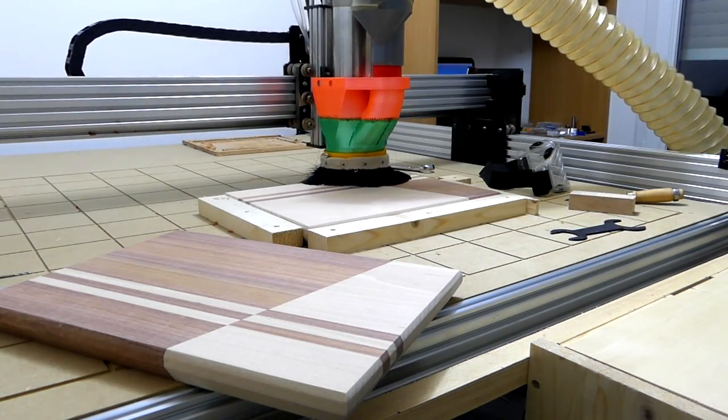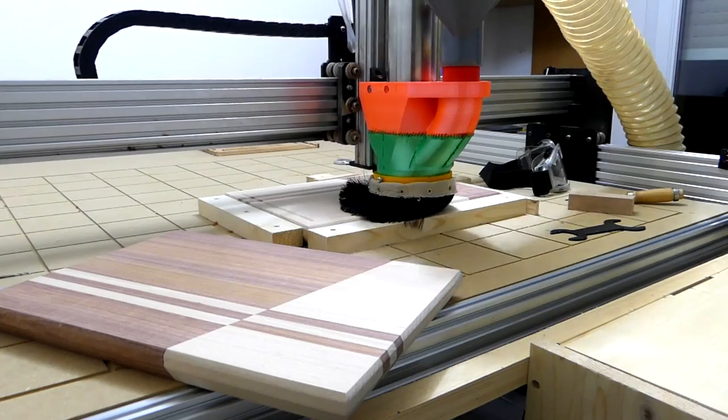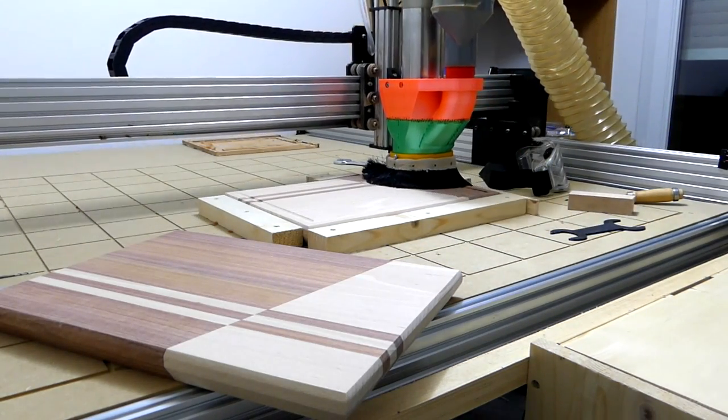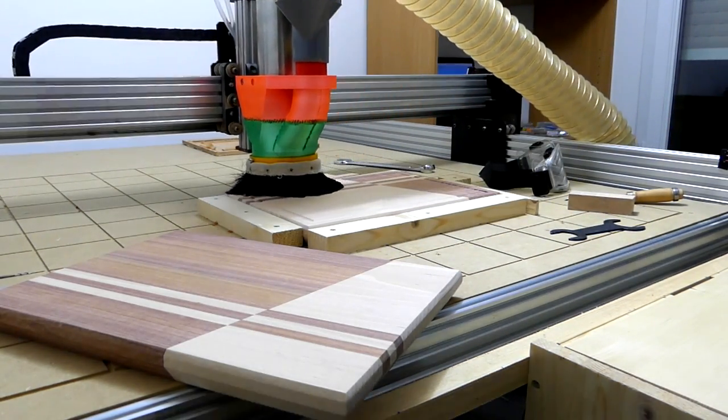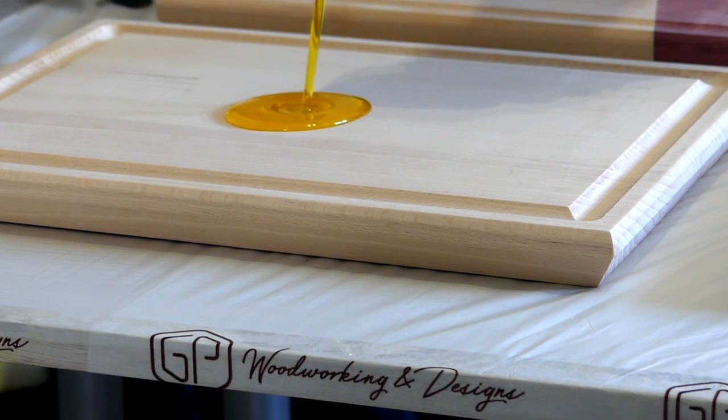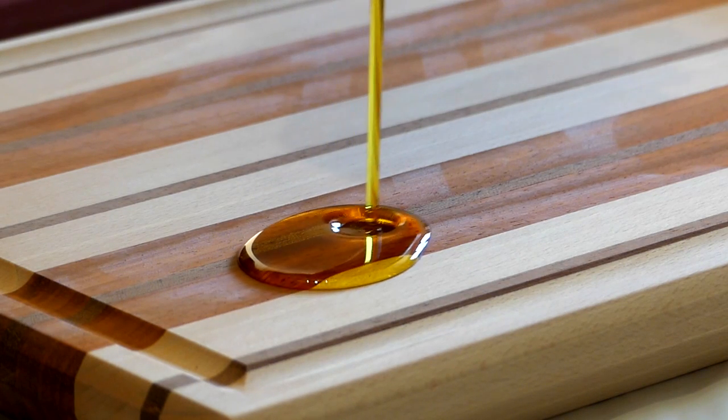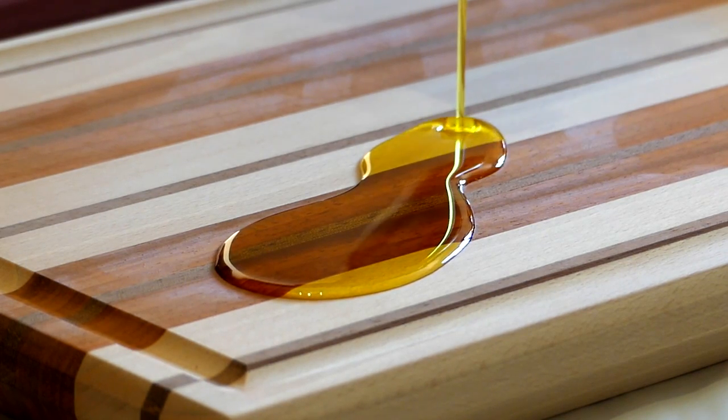But this time, I use my highly fashionable 3D printed CNC dust shoe to avoid making a mess like the first time, and now is where it gets interesting because I can finally finish them properly. First I put the purple heart out in the sun for UV exposure, and once it has a nice purple color, I can finally oil the boards. Now I'll let you enjoy that for a minute, and also, once oiling is complete, it's possible to finish them with a mixture of beeswax and oil to seal the surfaces and preserve them longer.